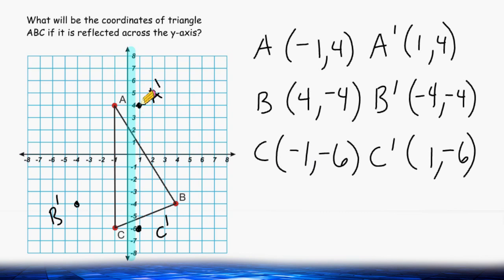Now what we are going to do is connect our points to see what our reflection looks like. So there is line segment AC, line segment BC, and line segment AB.